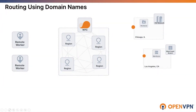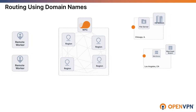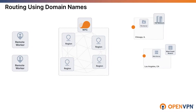Let's look at routing using domain names. As you can see in this slide, we have two networks: one is our headquarter network, or HQ, with a file server, and the other network is our west coast branch with a web server.